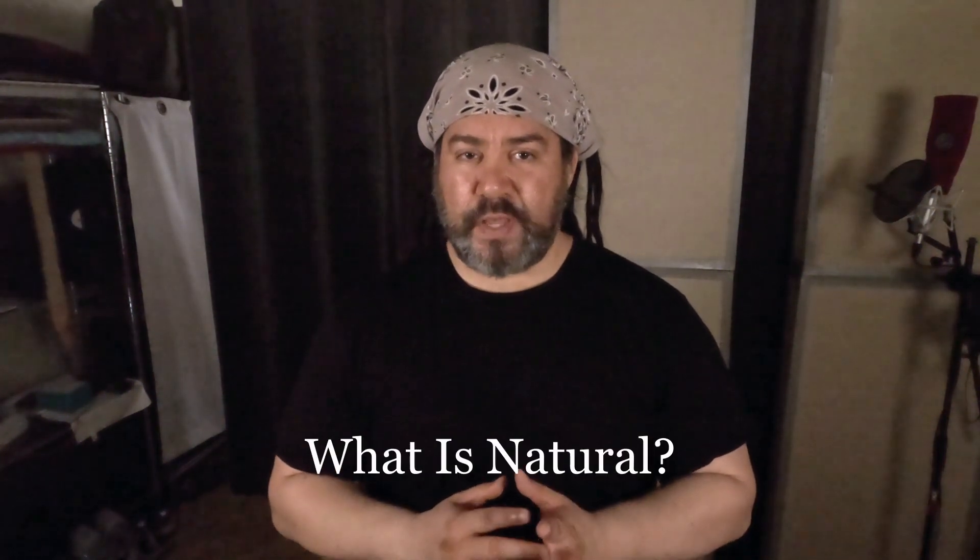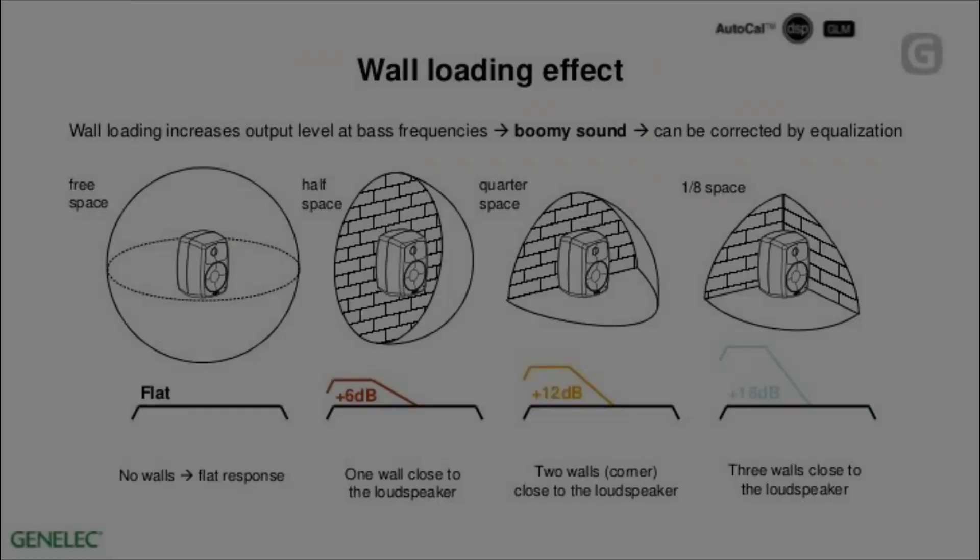The natural response of speakers is to have a bass boost — not necessarily in a free field or anechoic environment where there are no reflections. But the minute you add a floor or walls, you start dividing that spherical space into what's known as half space, quarter space, or eighth space. Every time you do that, all the sound that would have gone the other direction is now reflected. Because of the long wavelengths of bass, those reflections are in phase and create constructive interference. The sum result is a bass boost in rooms for speakers.